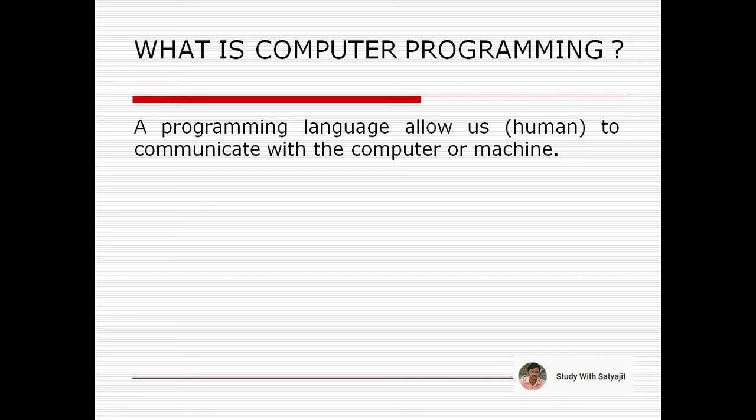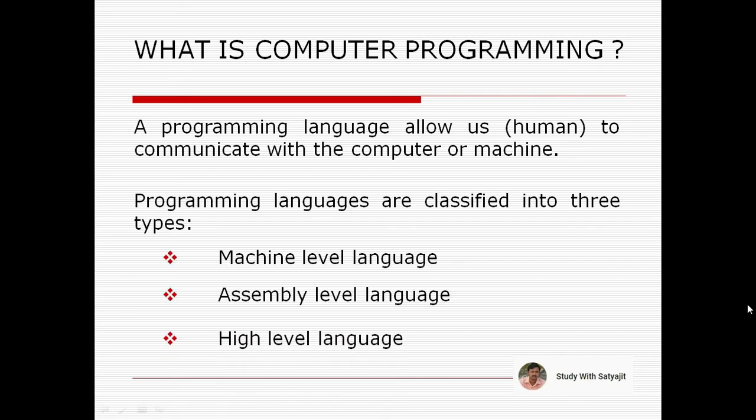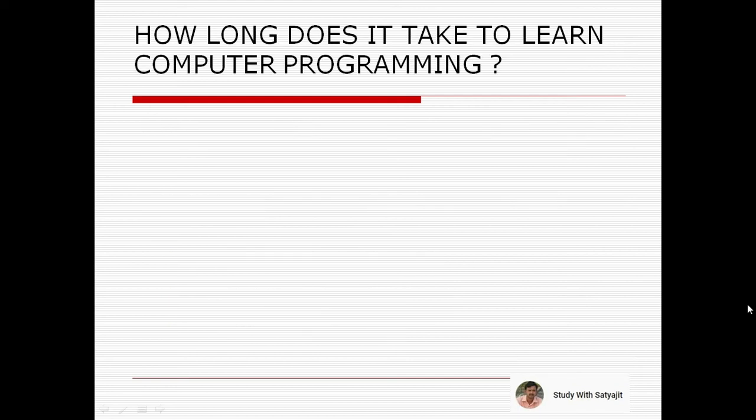Programming languages are classified into three types: machine level language, assembly level language, and high level language. Now you have an idea about what computer programming is. Let's move to the next topic.